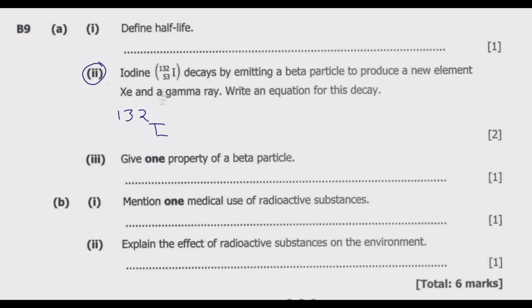so this is 132, then this is 53. So we are starting with this iodine, which emit a beta particle and producing a new element called this one and the gamma ray. So what is happening is, it's going to emit this negative electron called the beta particle. Then in the process, it's also going to emit the gamma ray